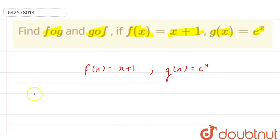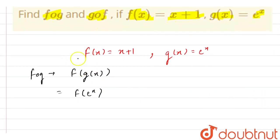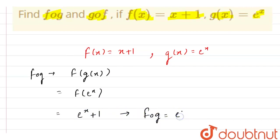Now, let's first find FOG. We can also write FOG as F of G(x). As we are given that G(x) is equal to e raised to power x, this means we can also write it as F of e raised to power x. Since when we have x then F(x) is x plus 1, this means F of e raised to power x is e raised to power x plus 1. Hence, FOG is equal to e raised to power x plus 1.